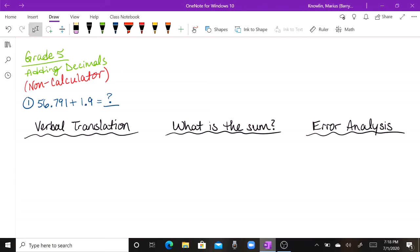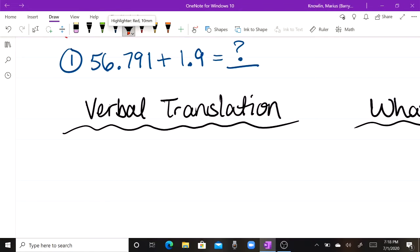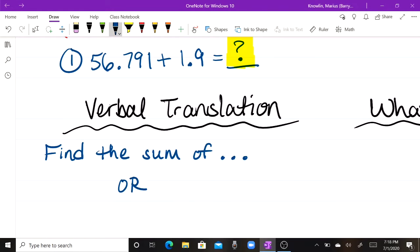All right, so number one says 56 and 791 thousandths plus 1 and 9 tenths equals what? All right, so I'm going to zoom in here. First thing we want to really focus on is this verbal translation here. I'm going to choose to start with the question mark. That question mark really can be translated to say, find the sum of, or we can say, what is the sum of?